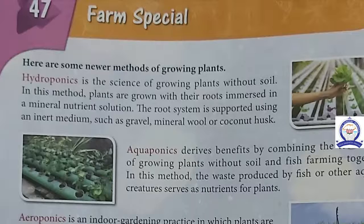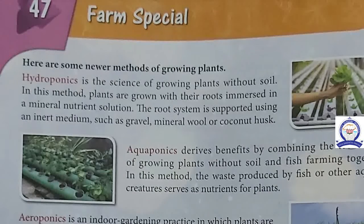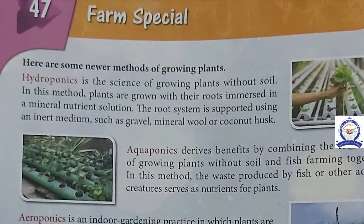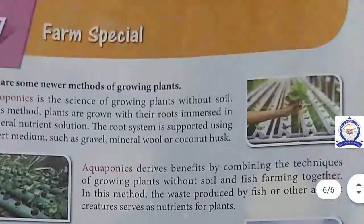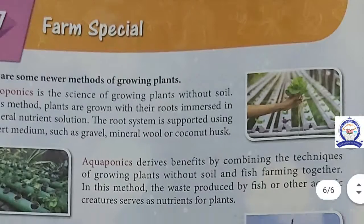Hydroponics is the science of growing plants without soil. In this method, plants are grown with their roots immersed in a mineral nutrient solution. The root system is supported using an inert medium such as gravel, mineral wool, or coconut husk.